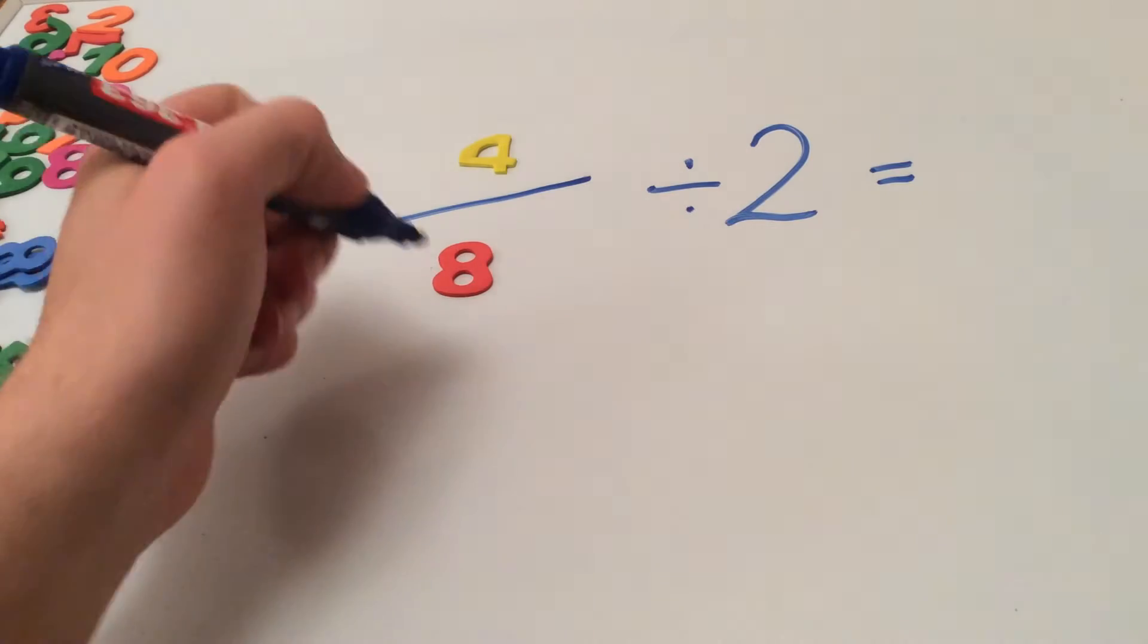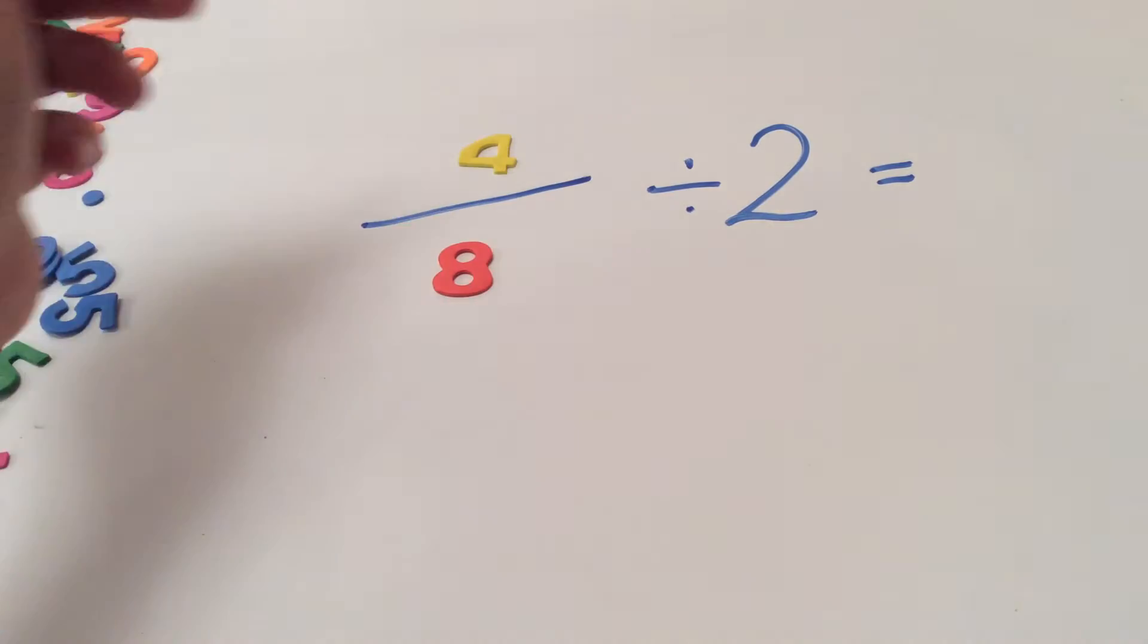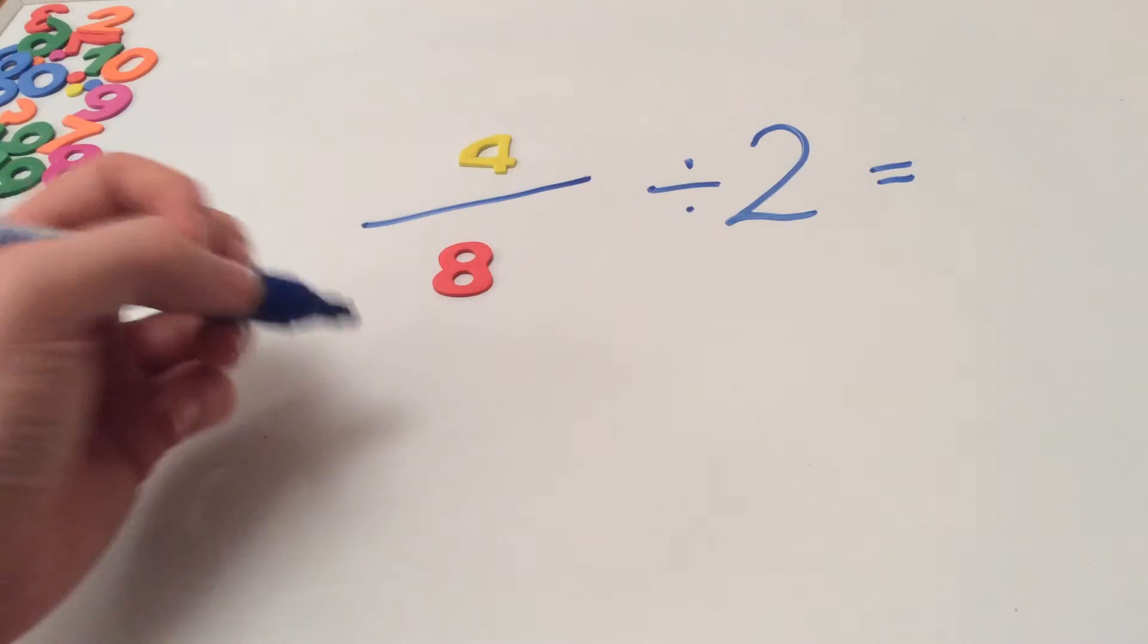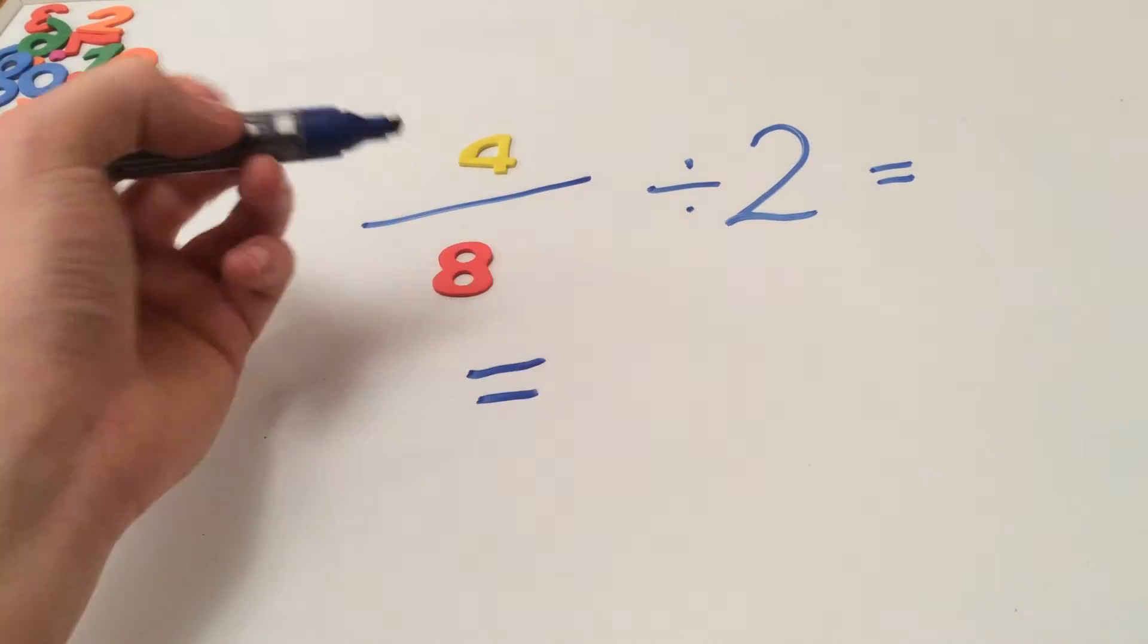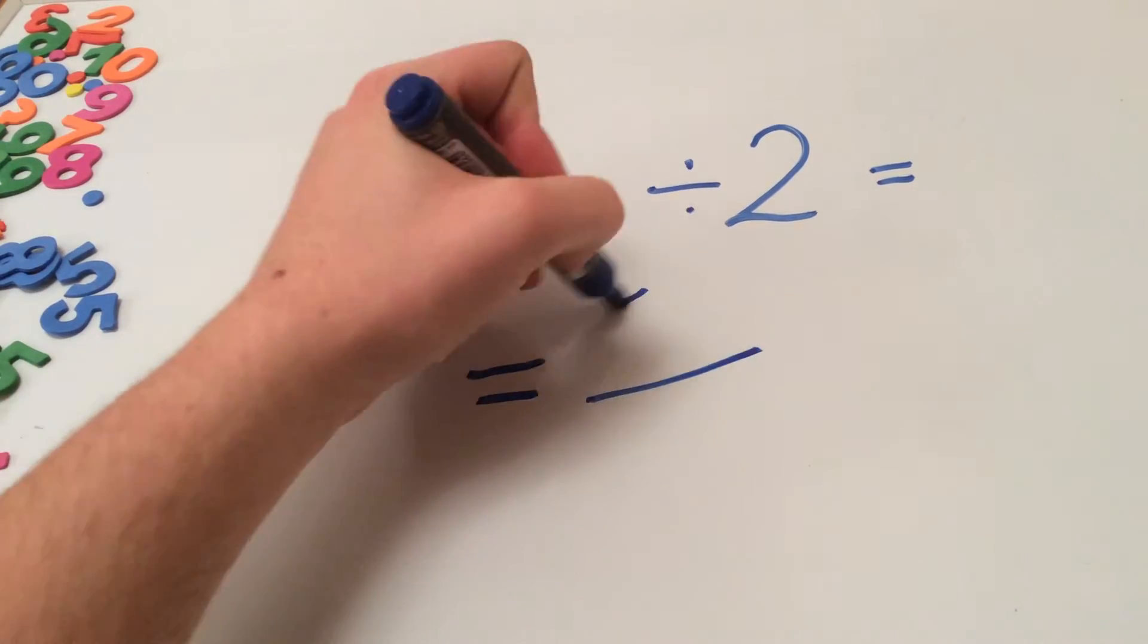Now it's important to note when dividing fractions by whole numbers the numerator stays the same. So the numerator in our answer will also be 4.